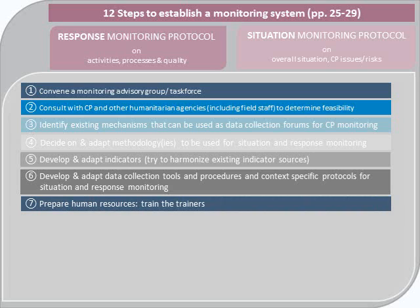The next part is preparing human resources. If you're going with an independent monitoring approach for response monitoring, you may need to recruit staff. If you're going with agency-based situation or response monitoring, you will need to identify enumerators — getting the NGOs involved to nominate who will collect the data — and train them. In larger emergency contexts, you may set up a cascading process of training: training certain people at the national level, who then go down to the state level or smaller administrative units to roll out the training there, and so on depending on how many layers you have.